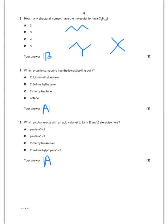Which alcohol reacts with an acidic catalyst to produce E-Z stereoisomers? The answer is going to be A, because when you dehydrate that you will have different groups on both carbons in the double bond.